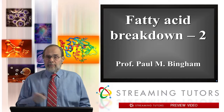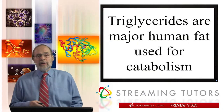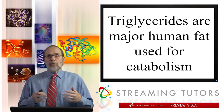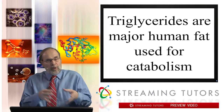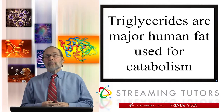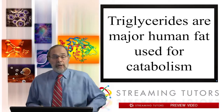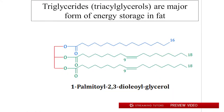As we said in the previous theory segment, triglycerides are the major human fat used for catabolism — that is, to store calories that can be consumed to generate energy for movement and thinking, or energy necessary for subsequent anabolic building projects. As a reminder, a triacylglycerol or triglyceride has three fatty acids esterified to the three hydroxyl groups on glycerol, as discussed in detail on earlier occasions.